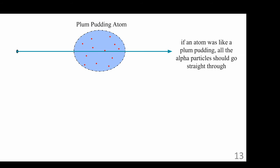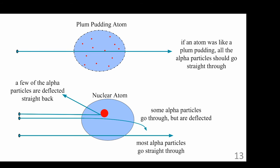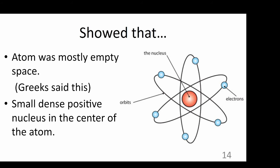If the plum pudding model were to hold true, we would expect all the particles to pass through the atom. However, this is not what Rutherford observed. Most of the particles in Rutherford's experiment passed through, but many of the alpha particles were deflected, and some were even deflected straight back to the beam's source. Essentially, what Rutherford's gold foil experiment showed is that the atom is mostly empty space and that a small, positive, dense nucleus exists in the center of the atom.